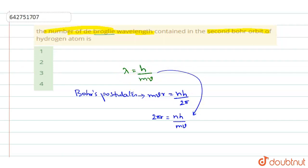So substituting this, you get 2πr equals n into lambda. So 2πr is n into lambda.